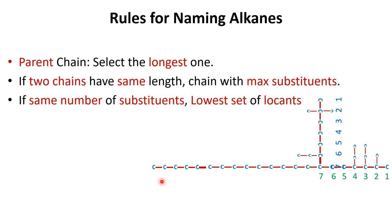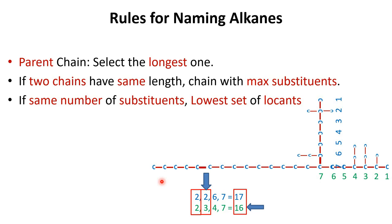Write down the locants for all substituents on both chains and compare them one by one. The first locants are both 2 — no difference. At the second locant, the blue-numbered chain has 2 while the green-numbered chain has 3. Since 2 is less than 3, the decision is made on this first difference, and the chain with blue numbers is selected as the parent chain.